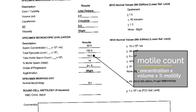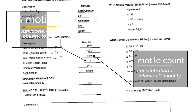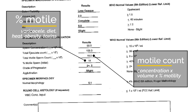The motile count is the sperm concentration multiplied by the volume multiplied by the percent motility. Along with the percent motility, these values give us a sense of how well the sperm you have are functioning. Having swimmers is good, but if they aren't moving, they aren't useful. Low motility can be related to varicocele, diet, excessive heat to the scrotum like hot tubs, or obesity and certain toxins.